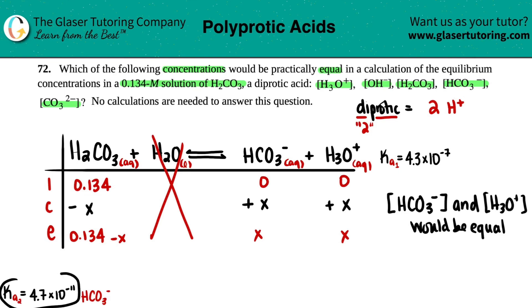this one is times 10 to the negative 11th. That means that at equilibrium, you're going to be favoring your reactant side. So in this case, if you have times 10 to the negative 11th, that means that at equilibrium, you basically have close to no products made.